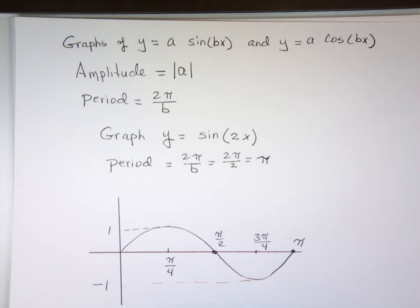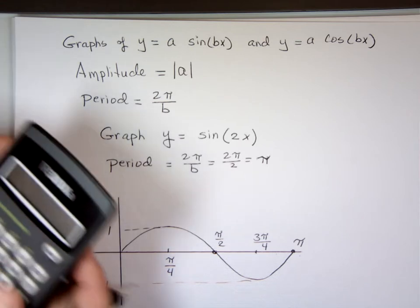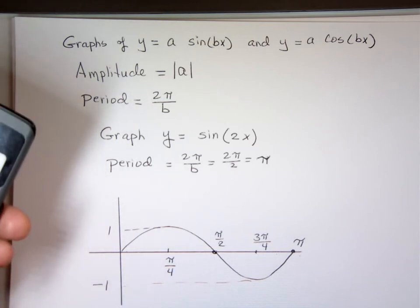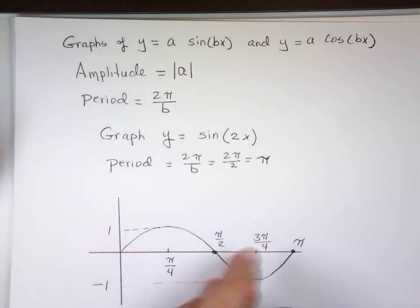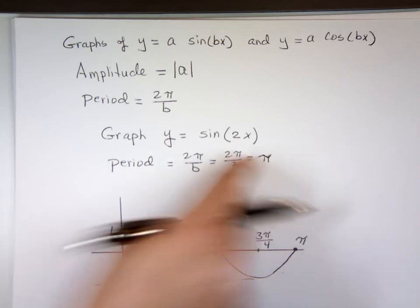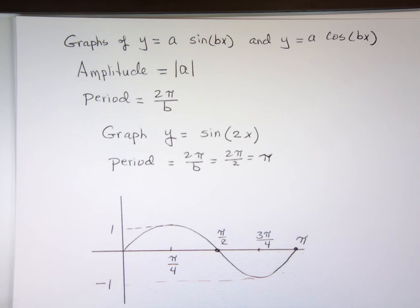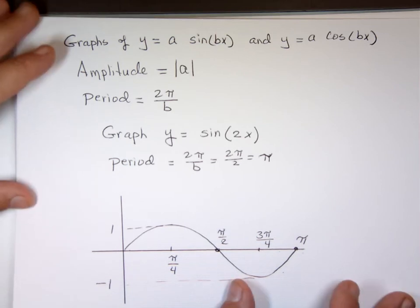In this case, the period is pi. You really want to know that because if you're using a graphing calculator, you need to know when you set up your x range from what minimum value to what maximum value you want to use. That's what the period tells you. You only have to go from 0 to pi to see one full cycle.